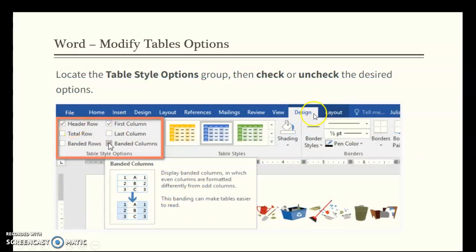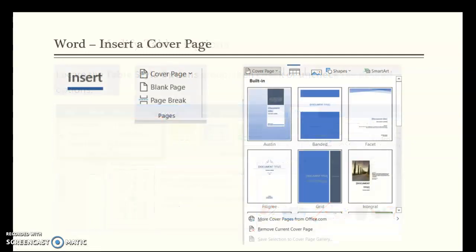Once you choose a table style, you can experiment with style options. The header row is usually bold by default; unchecking it removes the bold from the first row or column. Banded rows shade alternating rows in different colors to help differentiate between them. Just check or uncheck any option to see what style you prefer — if you don't like it, simply toggle it back.